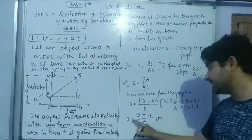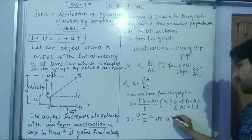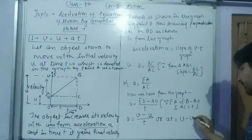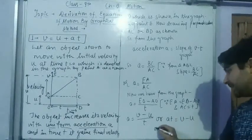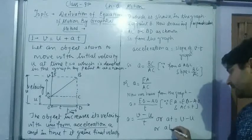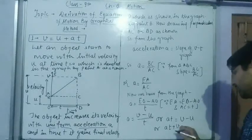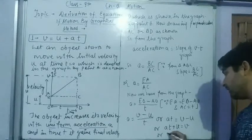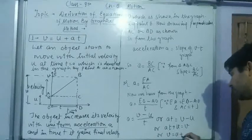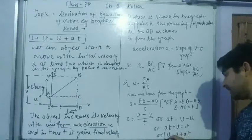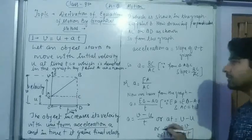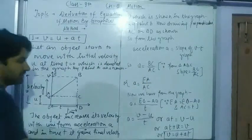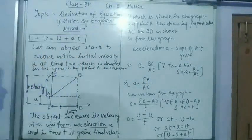So a = (v − u)/t. इस t को इधर multiply कर दीजिए: at = v − u. इस u को इसके साथ लाएंगे: at + u = v, or v = u + at. This is how we derive the first equation of motion.